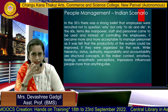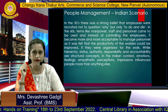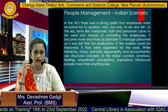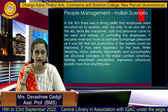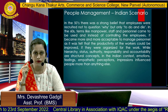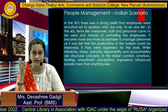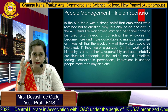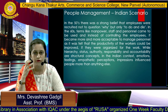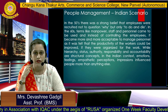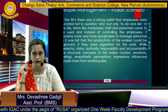This is the Indian scenario of people management. In the 50s, there was a strong belief that employees were required not to question why but only to do and die. In the 60s, terms like manpower, staff, personnel, and human resources came to be used, and instead of controlling employees, more focus was given on the development of employees in the organization. This is the current Indian scenario.